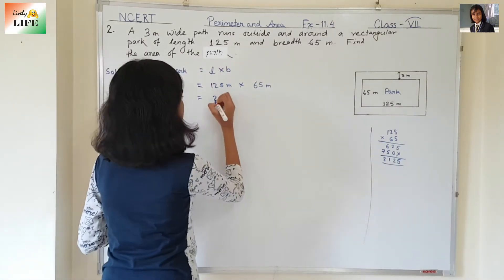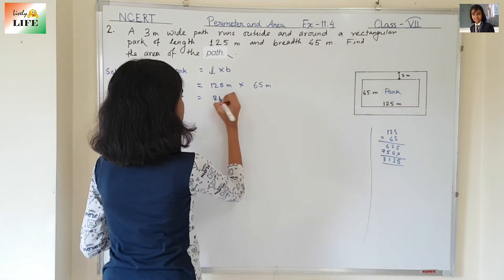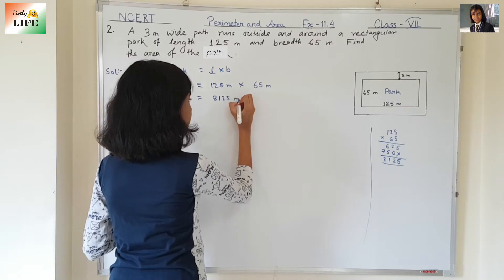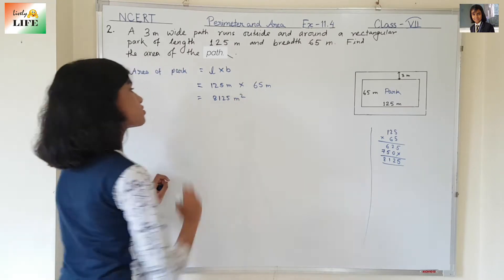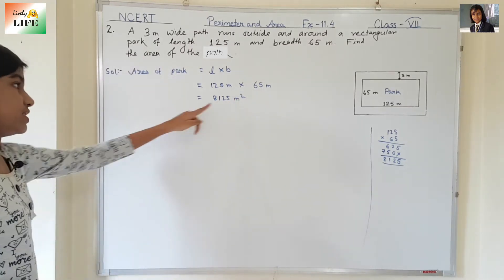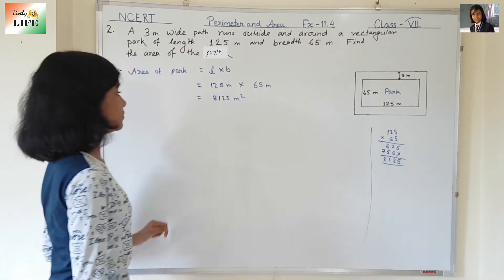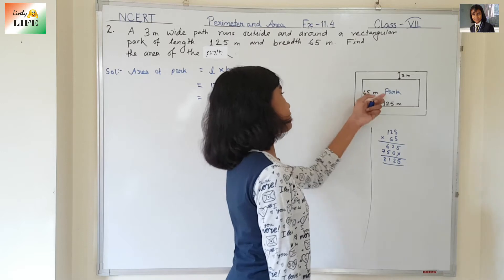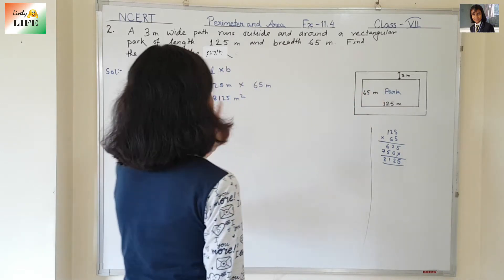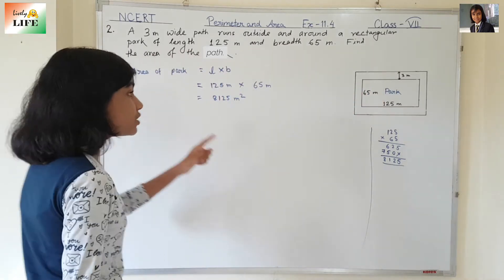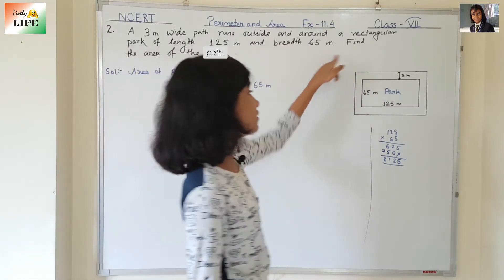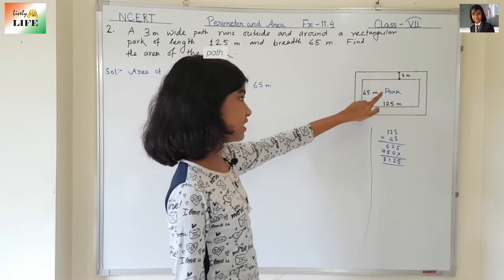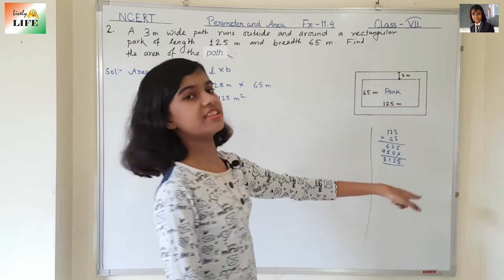The result is 8125 meter square. Because it is area, we write meter square. So 8125 meter square is the area of the park. Now we need to find the area of the bigger rectangle — that is, the area of the park with the path.